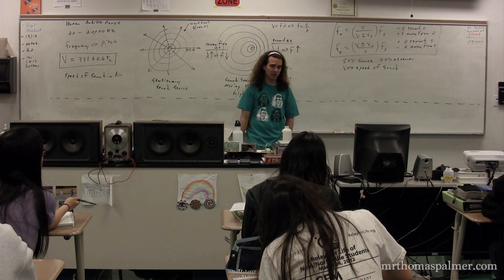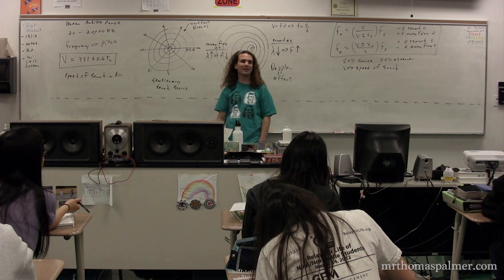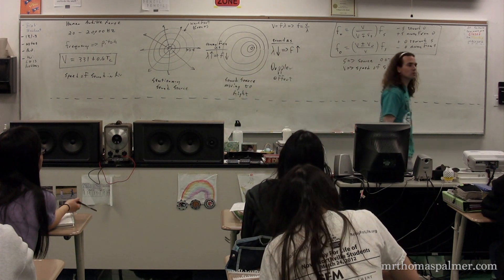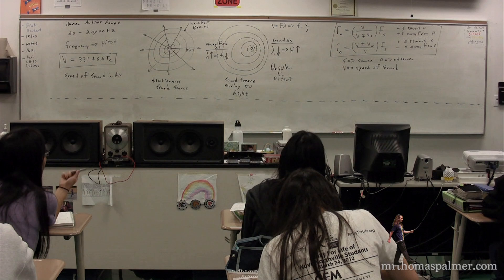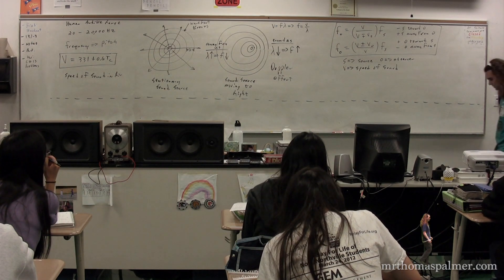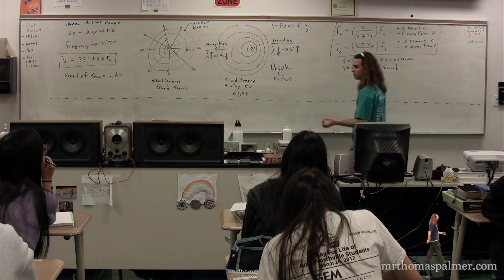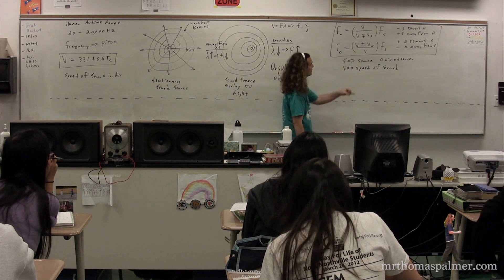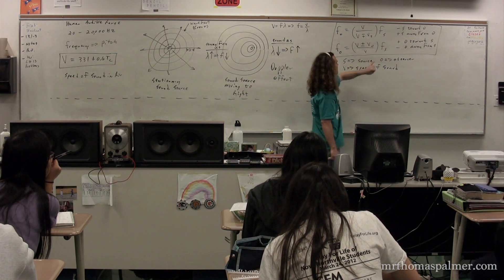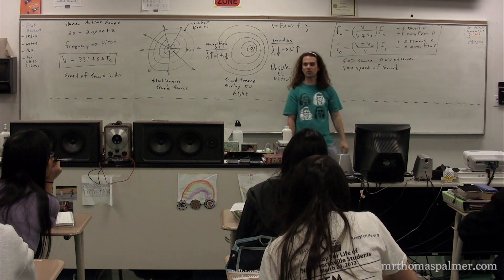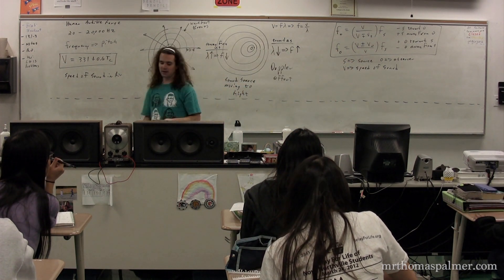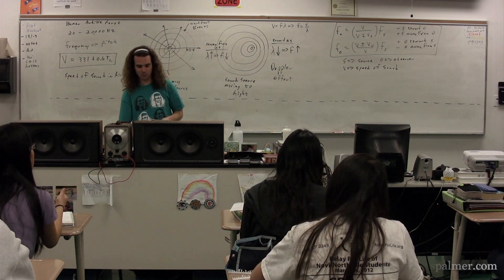There are two different equations. What is the difference between them? It simply has to do with whether the source is moving or the observer is moving. The first equation uses the speed of the source; the second uses the speed of the observer. You can clearly see we're going to use one or the other simply depending on which object is moving.